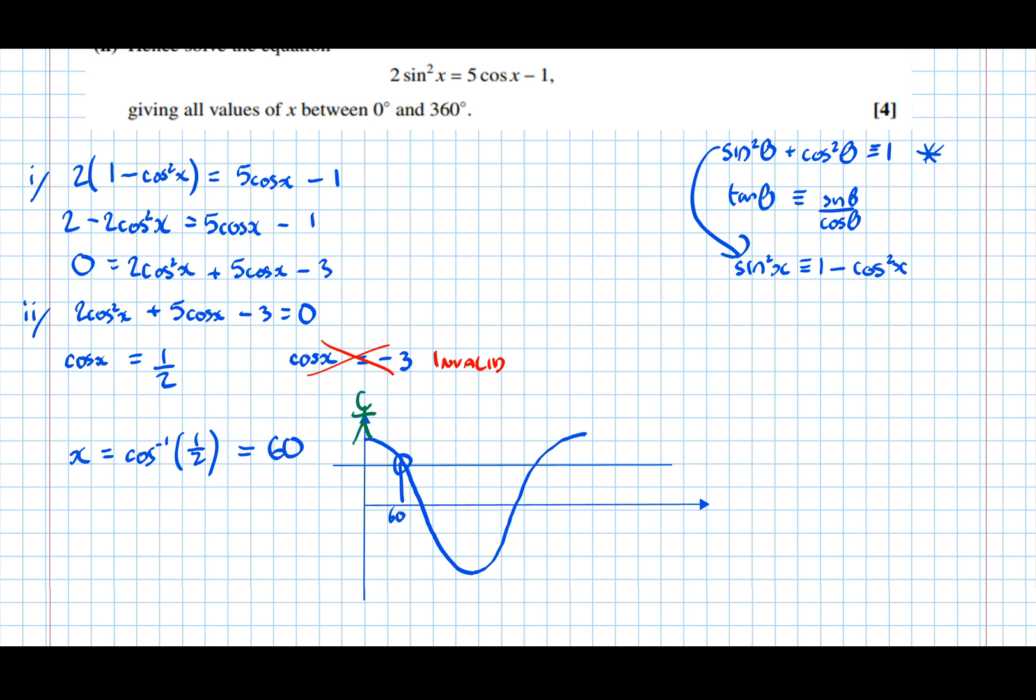So, imagine someone standing at the front of the graph there. To get the first solution, that person has to walk 60 degrees. So, the corresponding point on the graph, they also have to walk 60 degrees. Which means that x equals 60, and 360 take 60, which is 300 degrees.